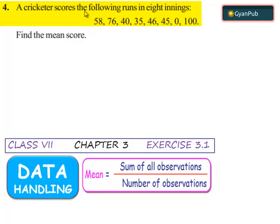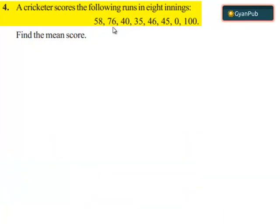Now question number four. A cricketer scores the following runs in eight innings: 58, 76, 40, 35, 46, 45, 0, and 100. Find the mean score.